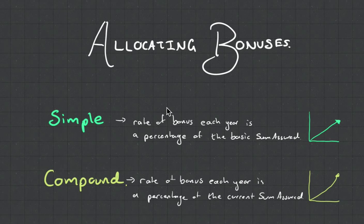Hey guys, it's MJ the Student Actuary and we're talking CT5 Chapter 6.4 and it's allocating bonuses.